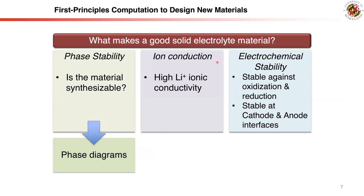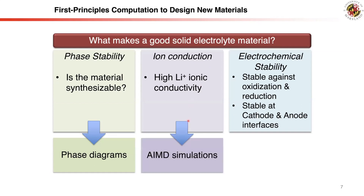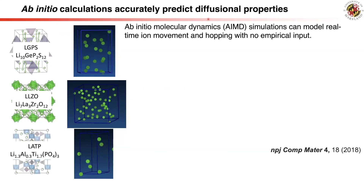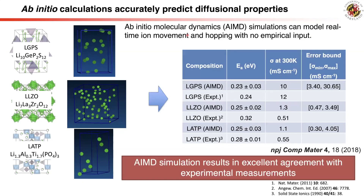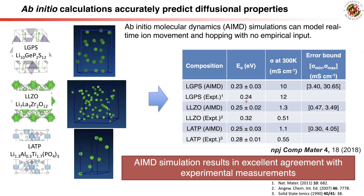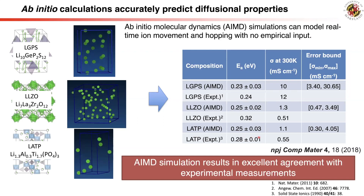We continue to evaluate candidates with good phase stability. For good solid electrolyte materials, high lithium conductivity is a crucial property, evaluated using ab initio molecular dynamics (AIMD) simulations. AIMD simulations can model the movement of ions with no assumptions about the ion-hopping mechanism. In our simulations of known solid electrolyte materials such as LGPS, GARNET-LLZO, and NASICON-LATP, the ionic conductivity predicted by AIMD agrees very well with experimental measurements.